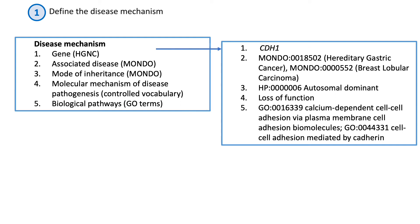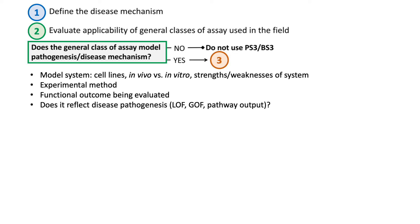As an example, the association between CDH1 and hereditary gastric cancer and breast lobular carcinoma can be described by the autosomal dominant mode of inheritance, loss of function mechanism, and GO terms that describe the related pathway. These steps can help the curator determine which functional assays are suitable for a given gene-disease pair. Next, the curator should assess the general classes of assay used in the field, weighing factors like the model system and experimental method, the function of the protein under evaluation and its relevance to the disease, and if the readout is reflective of the disease mechanism as a whole. If not, PS3 and BS3 should not be used.